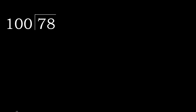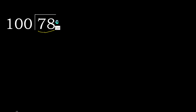78 divided by 100. 7 is less, therefore next. 78 is less, therefore next. That is not a number, therefore complete — always complete with 0. Here: 0 point.